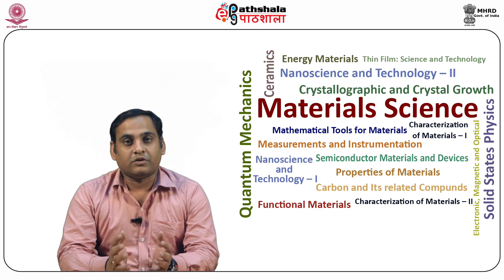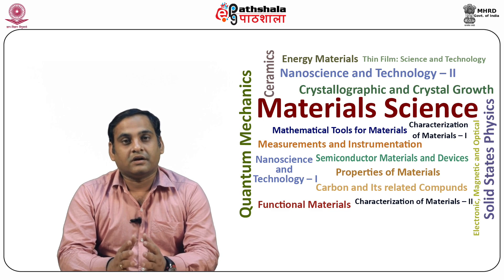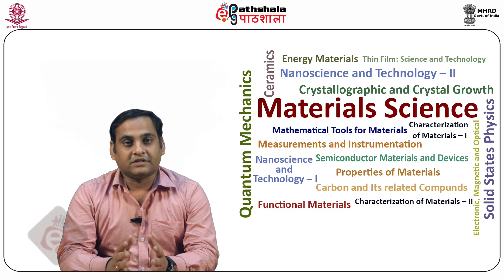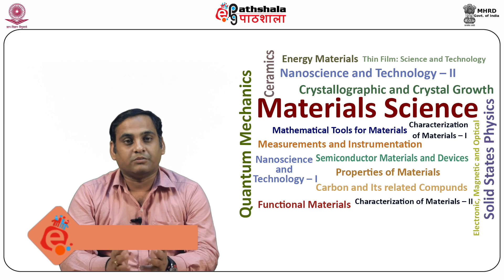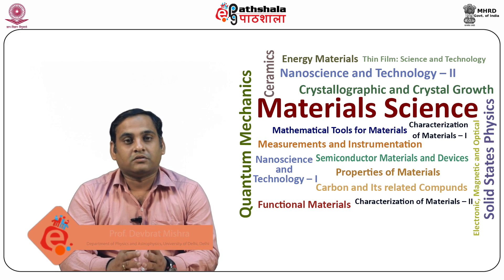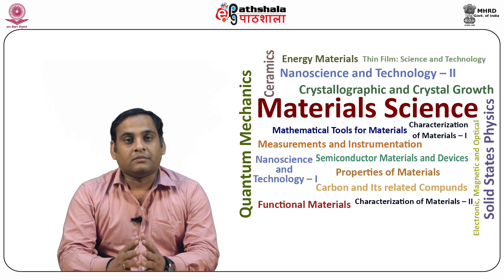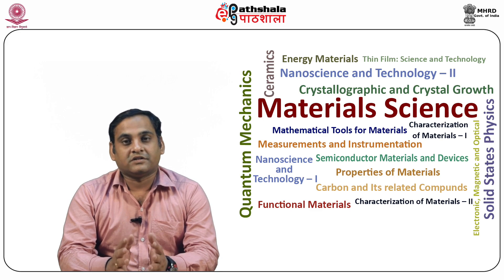So students, let us summarize what we have learnt in this module. Luminescence property of a material and excitation and emission phenomena are explained. Luminescence efficiency dependence on temperature and concentration was described. We saw the electroluminescence property of a material and its effects. The Franck-Condon principle of radiative transitions was also explained. Thank you.